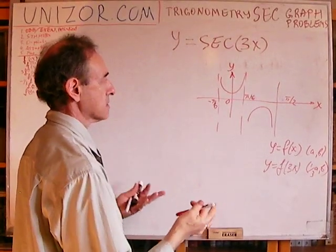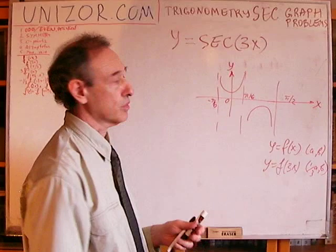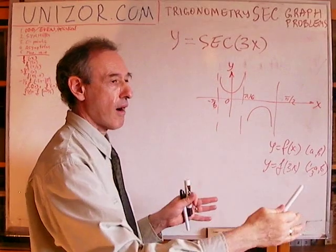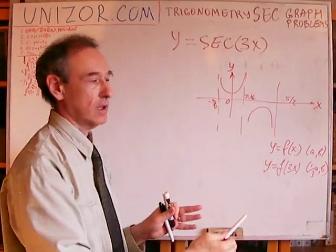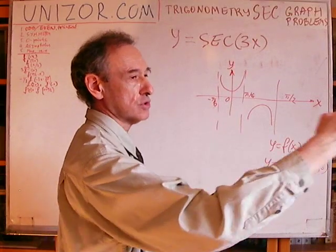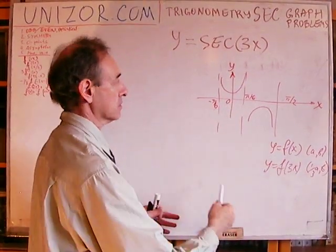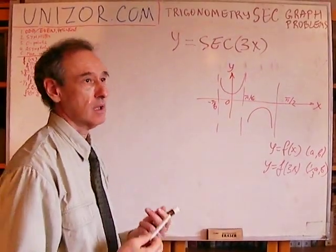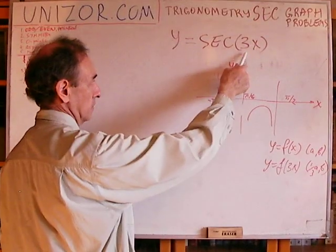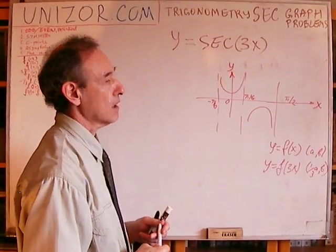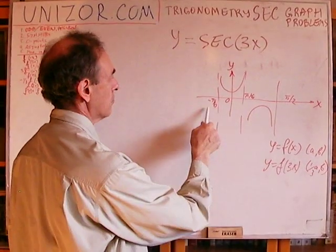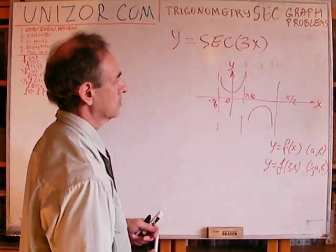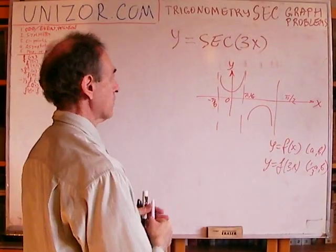The graph looks exactly the same, just the asymptotes are spaced at π/3 apart — three times less than before. Specifically from -π/6 to π/6, from π/6 to π/2, etc. The general shape remains exactly the same.